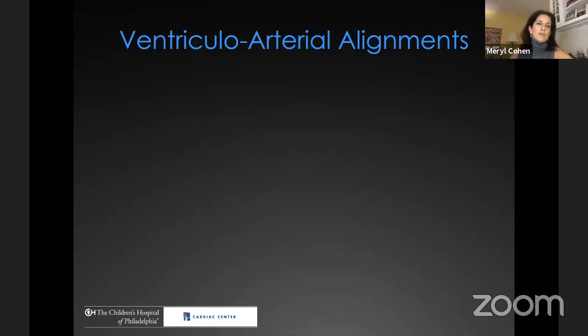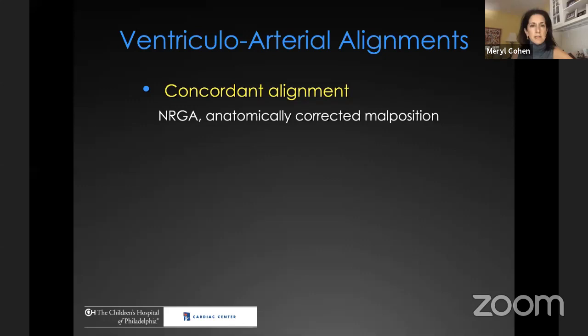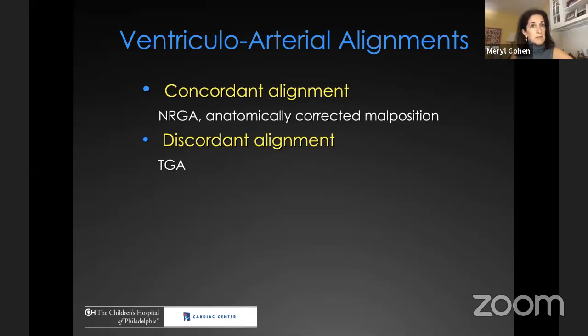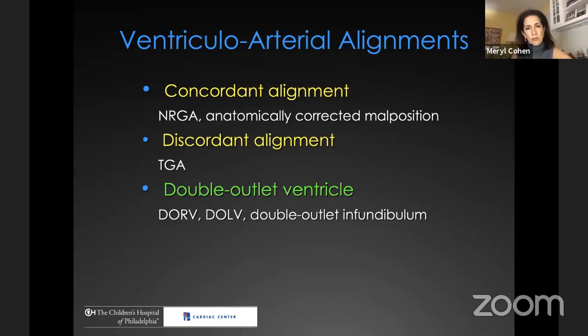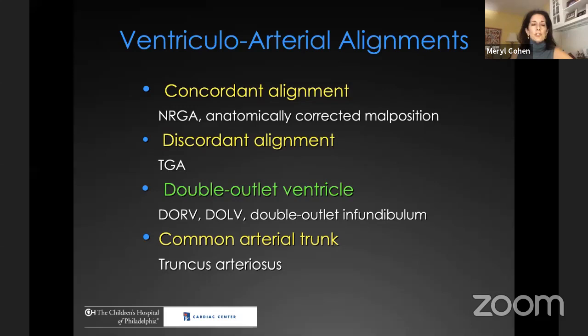I'm going to start by talking about ventricular-arterial alignments, of which there are essentially four types. You can have concordant alignment, seen in normally related great arteries as well as in the rare lesion of anatomically corrected malposition, where the aorta still arises from the left ventricle and the pulmonary artery from the right ventricle. You can have discordant alignment — we've covered transposition extensively in previous webinars. Then you can have double outlet ventricle, most commonly double outlet right ventricle, and in some cases it's quite challenging to decide where the great arteries are arising. And of course you can have a common arterial trunk, such as in truncus arteriosus.